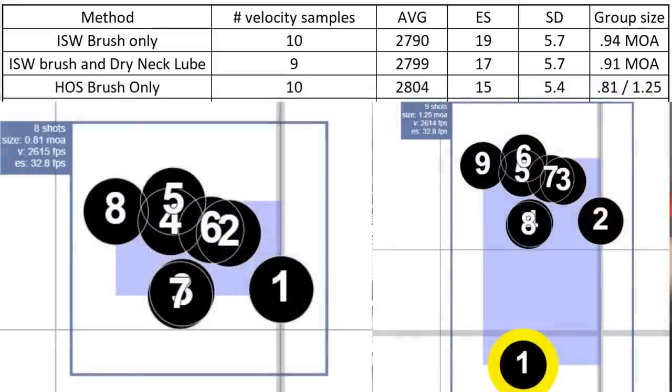With our Hornady One-Shot, over 10 samples, our average velocity was 2804 feet per second. Our standard deviation was 5.4 and extreme spread was 15. The 8 shot group size was 0.81 MOA. The 9 shot if you include the pull, which I absolutely consider a pull, was 1.25 MOA.